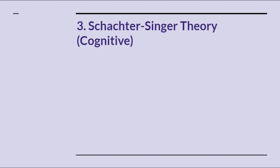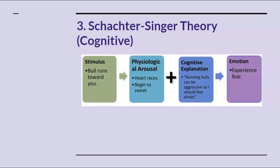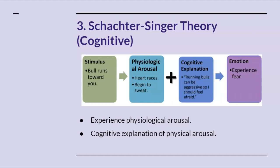The third theory is the Schachter-Singer theory. The previous two theories do not address cognitive factors. Schachter and Singer's experiment served as the foundation for their theory of emotion. Recall that participants were drugged with epinephrine and then used the cognitive label of happy or angry to explain their current emotional state. In this case, physiological arousal plus the cognitive explanation equals the emotion — or one plus two equals fear. This theory may explain how you start feeling scared when you hear creepy music in a movie, because you're trying to find explanations in your head for why the music sounds the way it does.